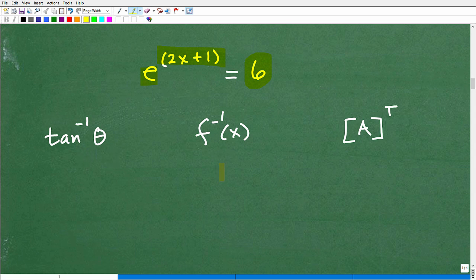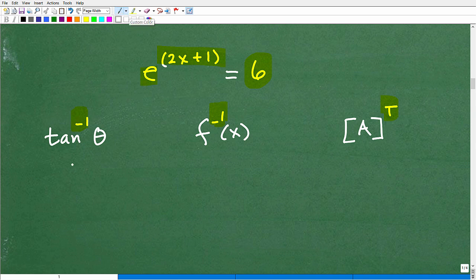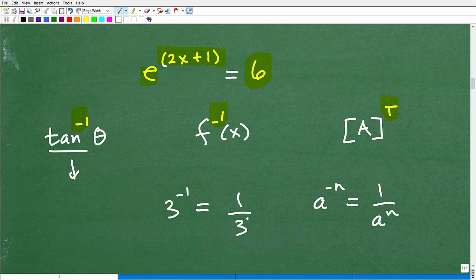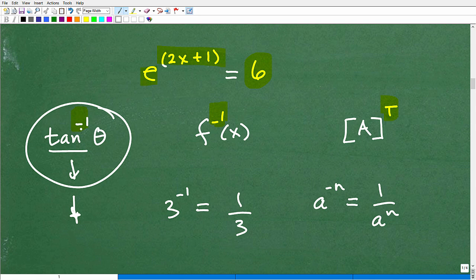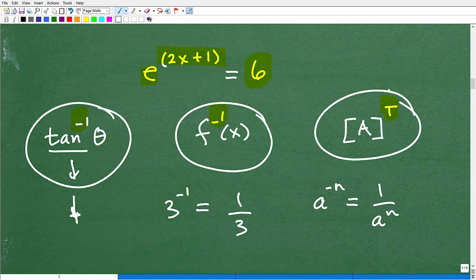And we also have superscripts written like this. Technically it's something in the top right, not in the bottom right. And each one of these things means something different. So in trigonometry, this is the arc tangent. This isn't like the reciprocal. What if I had 3 to the negative 1? That means 1 over 3. What does A to the negative N mean? That means 1 over A to the N. So this is like finding the reciprocal of these numbers or dealing with a negative exponent. But in trigonometry, this means something different. This expression with this superscript means the arc tangent. This right here, we're talking about functions. This means find the inverse function. And if we're dealing with matrices, this means find the transpose of a particular matrix A.